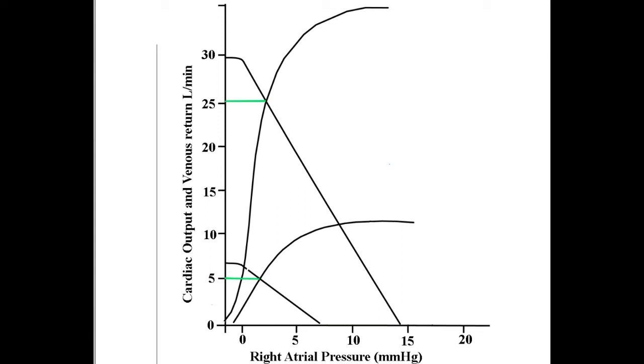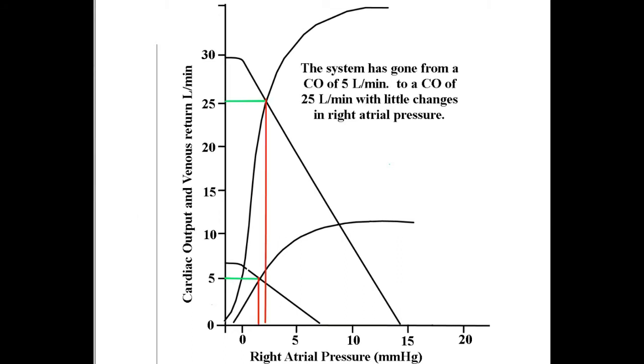We have now gone from a cardiac output of 5 liters a minute to a cardiac output of 25 liters a minute. Now, because of the increased ability of the heart to contract or increase in contractility, there is little if any increase in preload. Some have suggested that there is a slight increase in preload during exercise, which we see here.